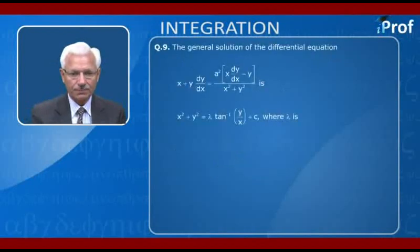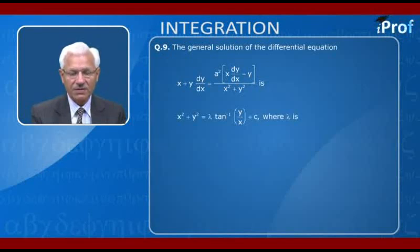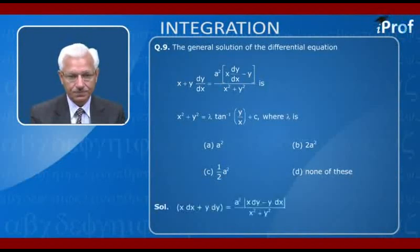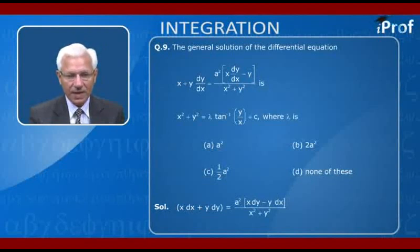The general solution of (x + y)(dy/dx) = a²(x dy/dx − y)/(x² + y²) is x² + y² + λ·tan⁻¹(y/x) + c, where λ is: (a) a², (b) 2a², (c) (1/2)a², (d) none of these. The differential equation is rewritten as x dx + y dy = a²(x dy − y dx)/(x² + y²).